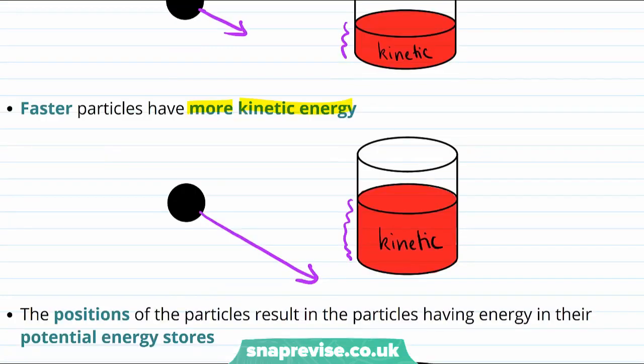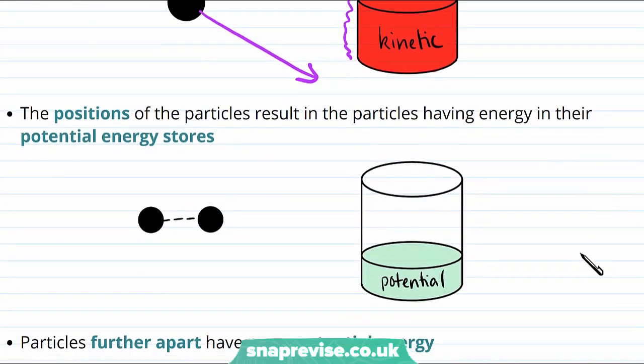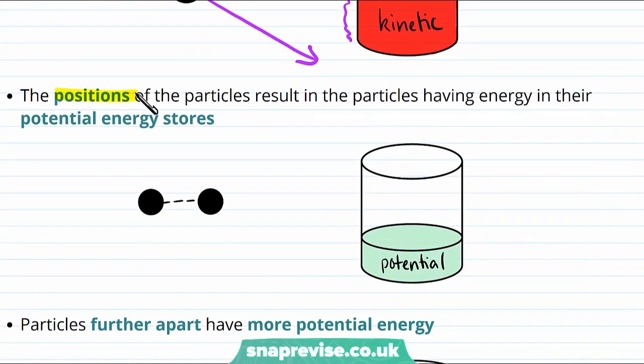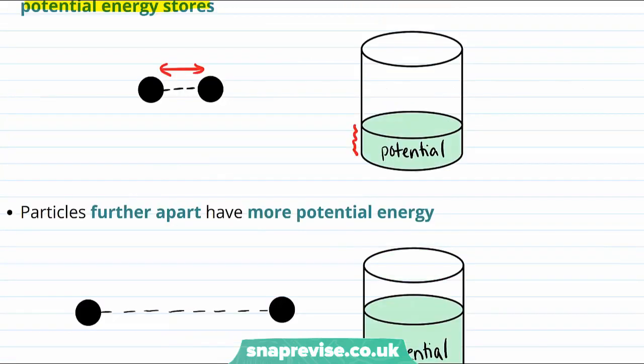So we know these particles have kinetic energy, but they also have potential energy. And the thing is the positions of the particles result in the particles having energy in these potential energy stores. Let's say we looked at two particles and the bond between them was short. Then they might have a small amount of potential energy. But if these particles are further apart, we would say they had more potential energy. Just like how if you're higher up off of the ground or further away from the ground, you have more gravitational potential energy.